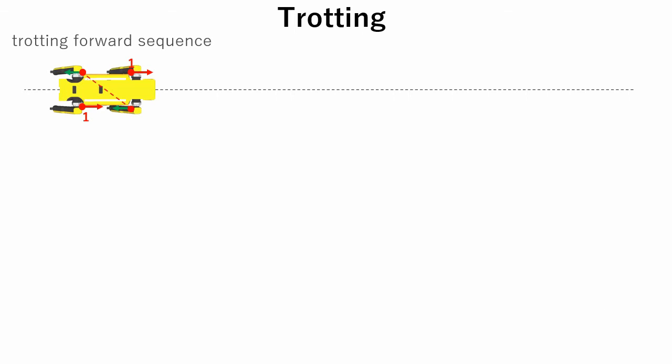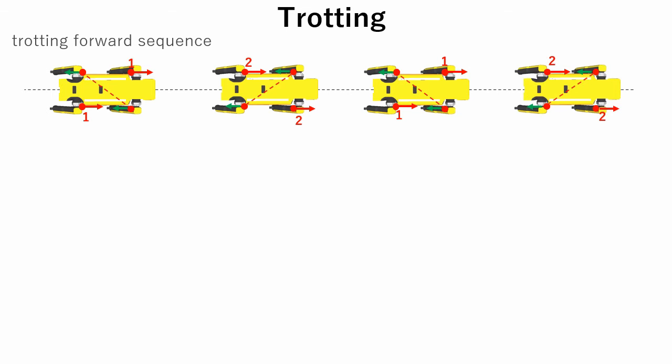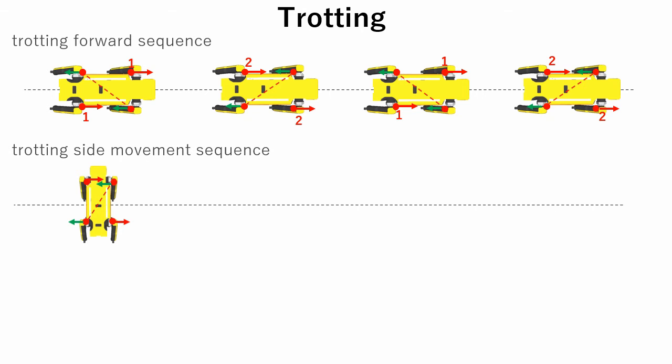This is trotting forward sequence. While two diagonal legs swing forward, the other two legs kick the ground. For side movement, the idea is the same. Note that diagonal legs always swing to the robot moving direction and kick to the opposite direction.